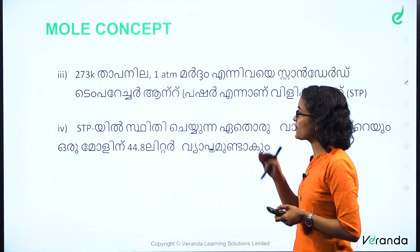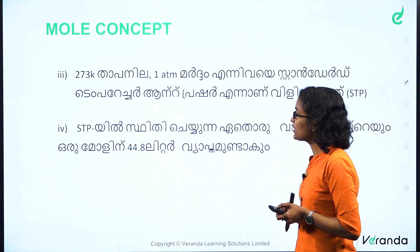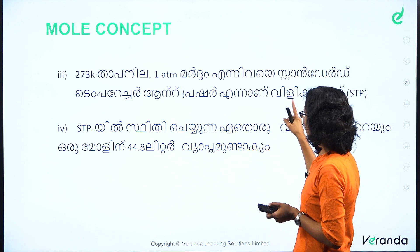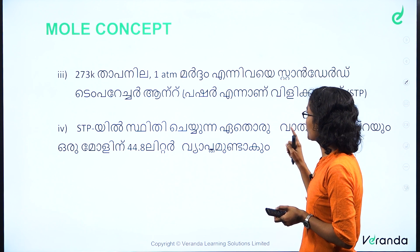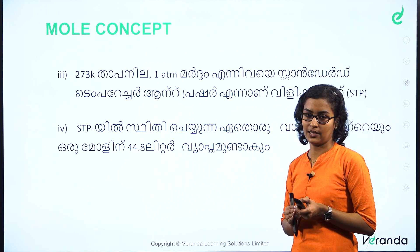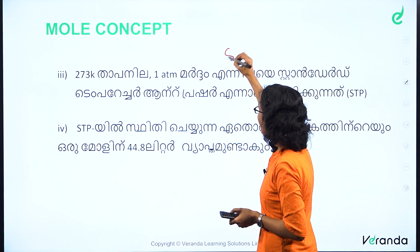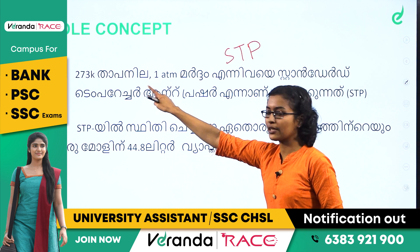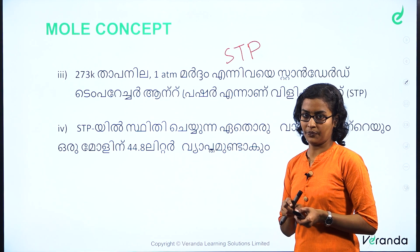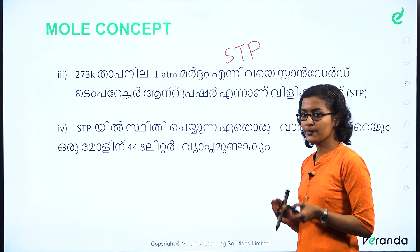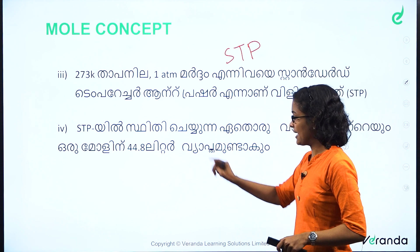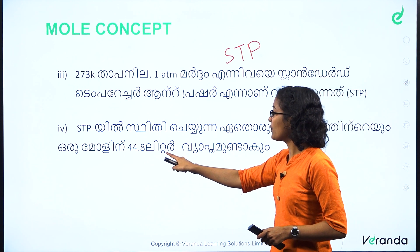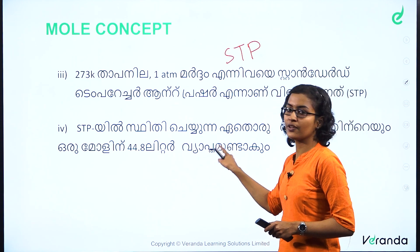The third question relates to standard temperature and pressure condition. We call it STP — standard temperature and pressure. It is called 1-atmosphere pressure. At STP, you need to use 22.4 litres per mole.